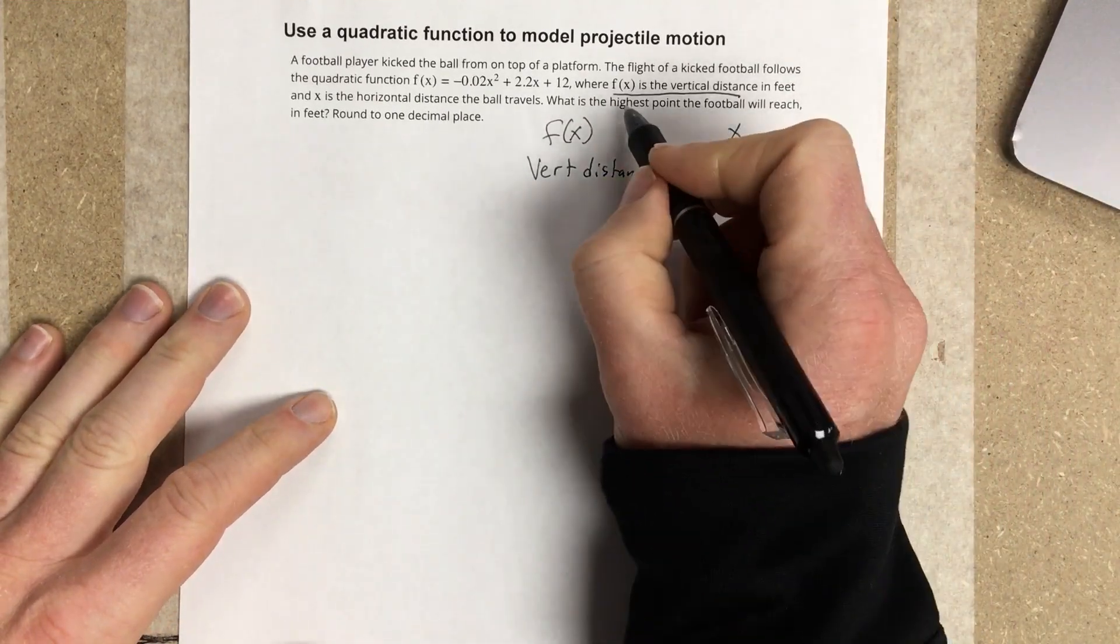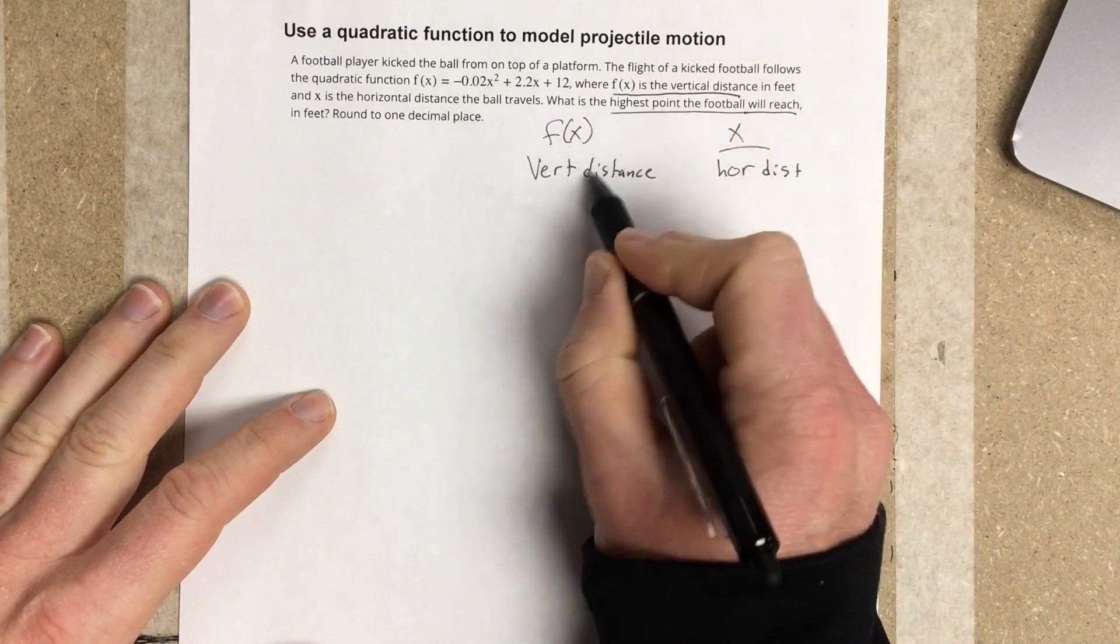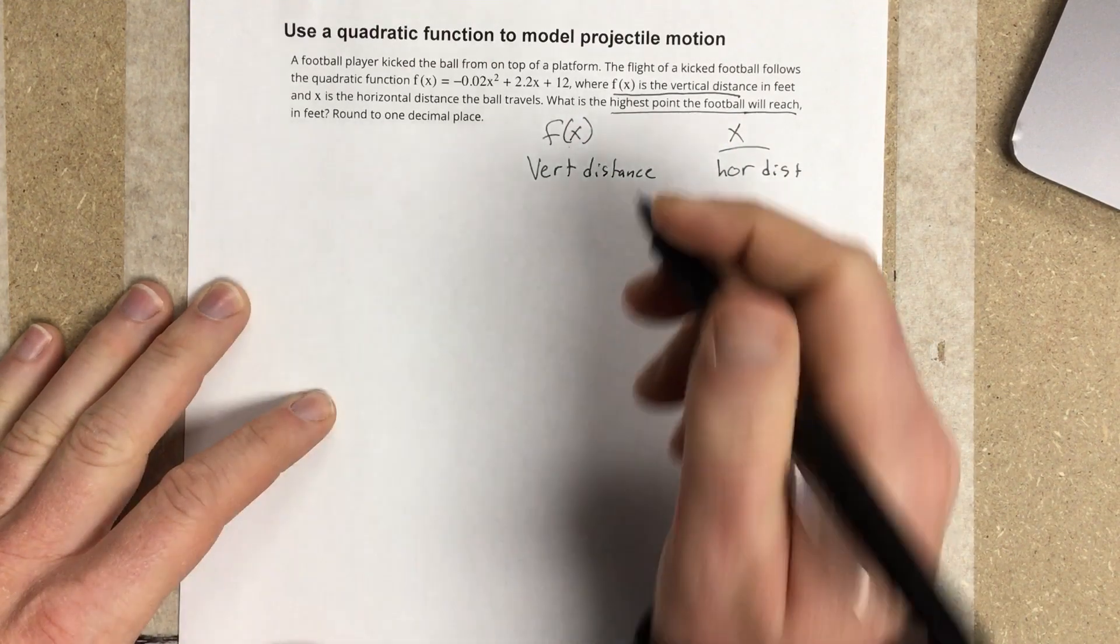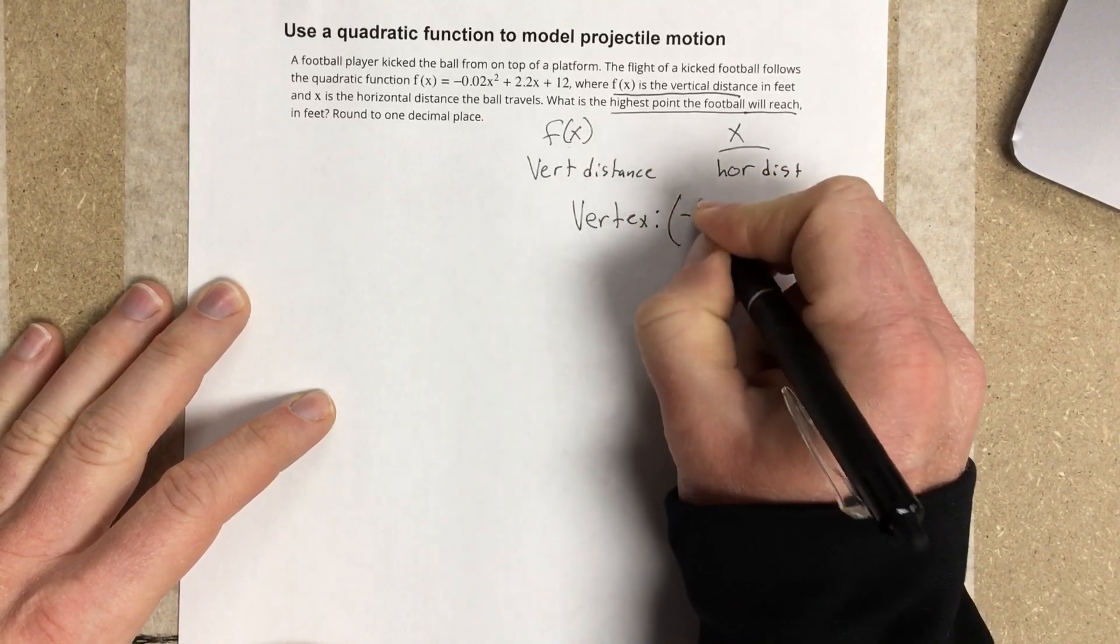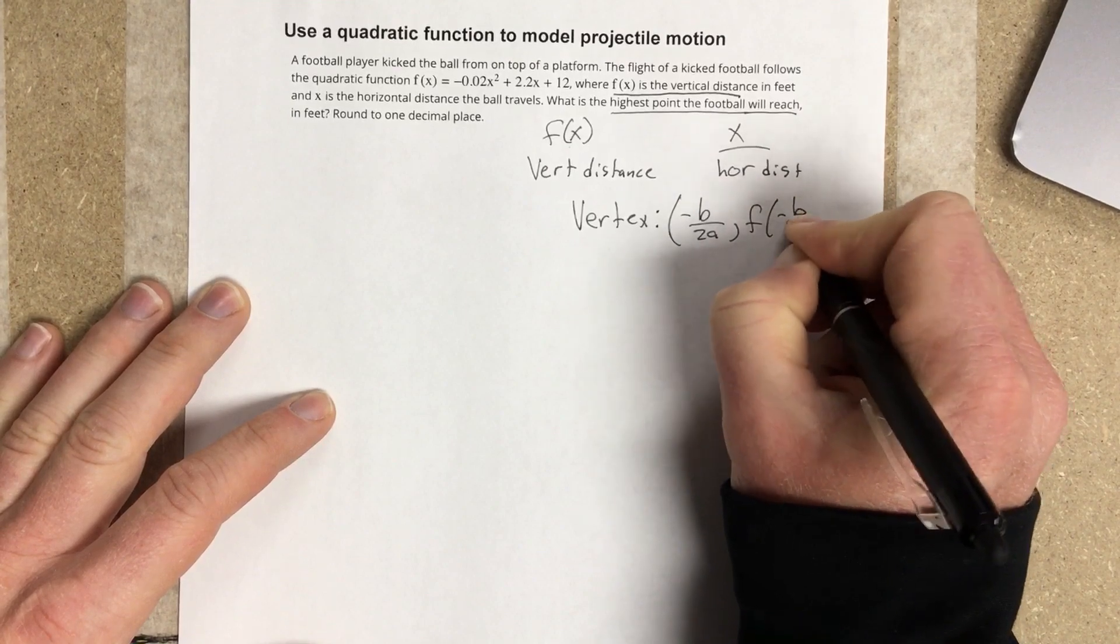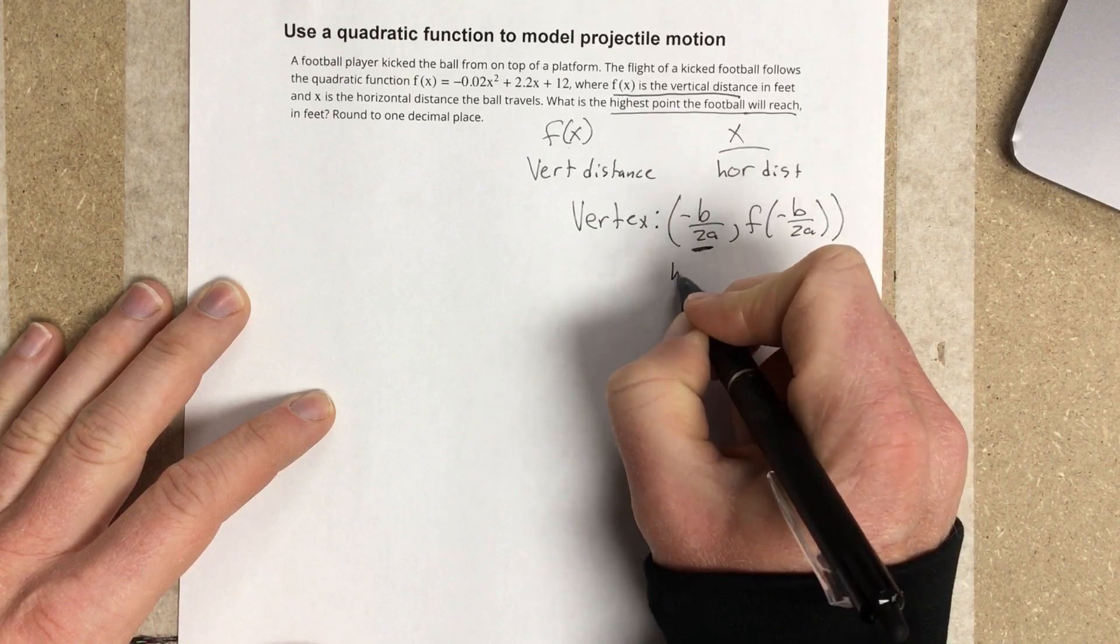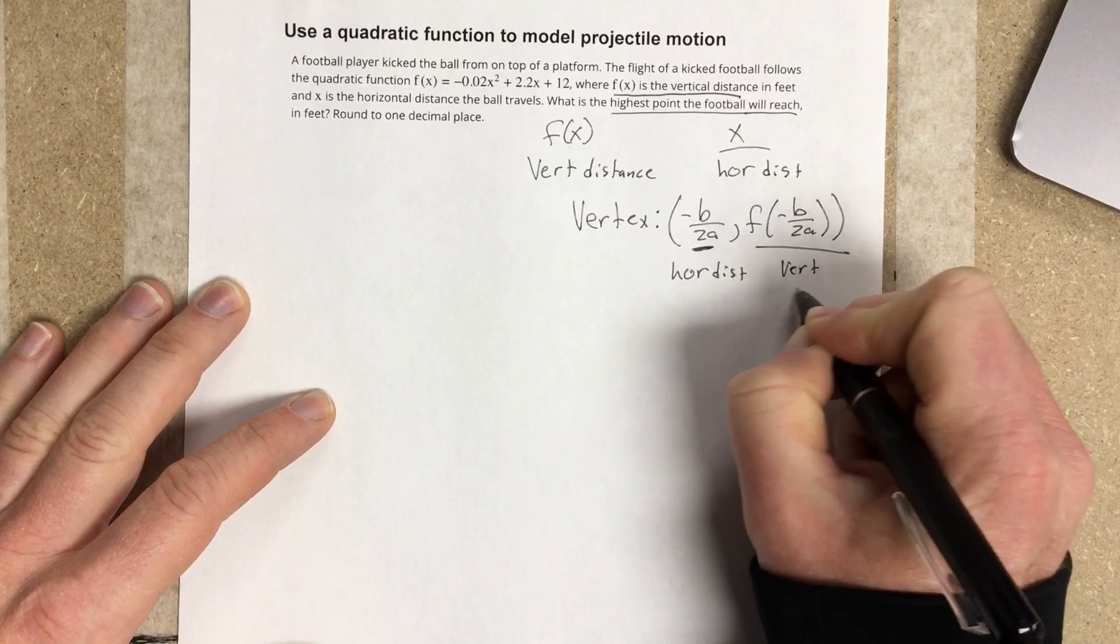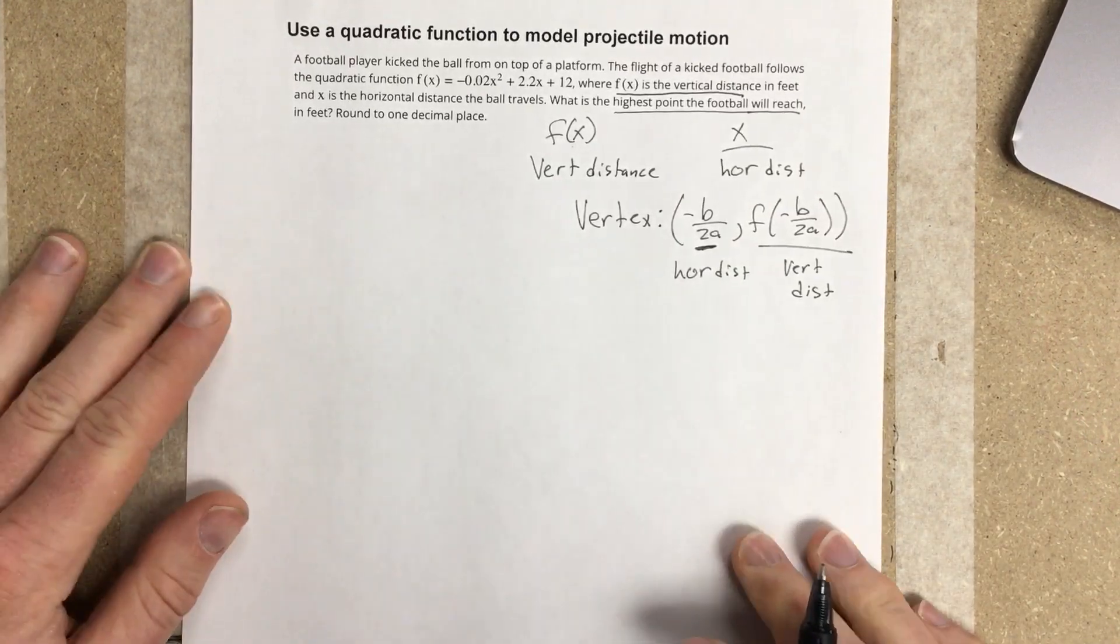They want to know the highest point the football will reach, so they're talking about the vertical distance. We're really looking for this f(x). But anytime we're trying to find the maximum or the highest, we're going to find the vertex, which would be negative b over 2a, comma f of negative b over 2a. This is my x value, which is horizontal distance. This is my y value, which is vertical distance. Just like the previous problem, I'm looking for the f of negative b over 2a part of this function.